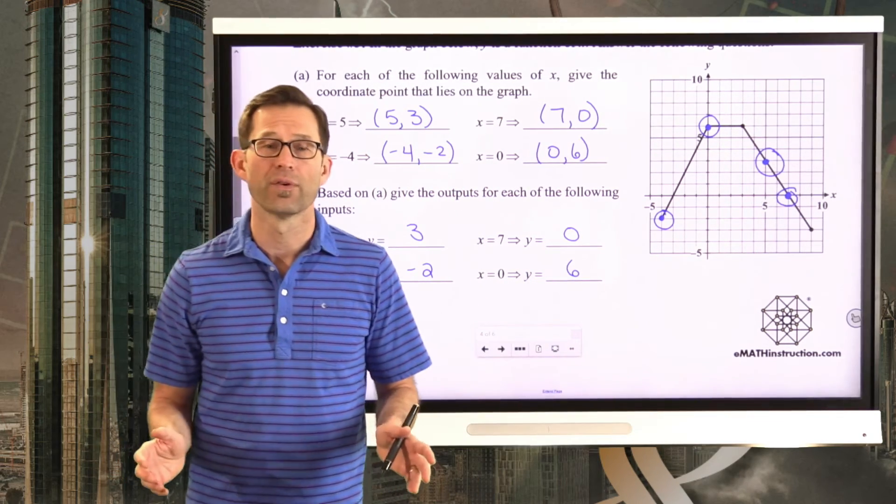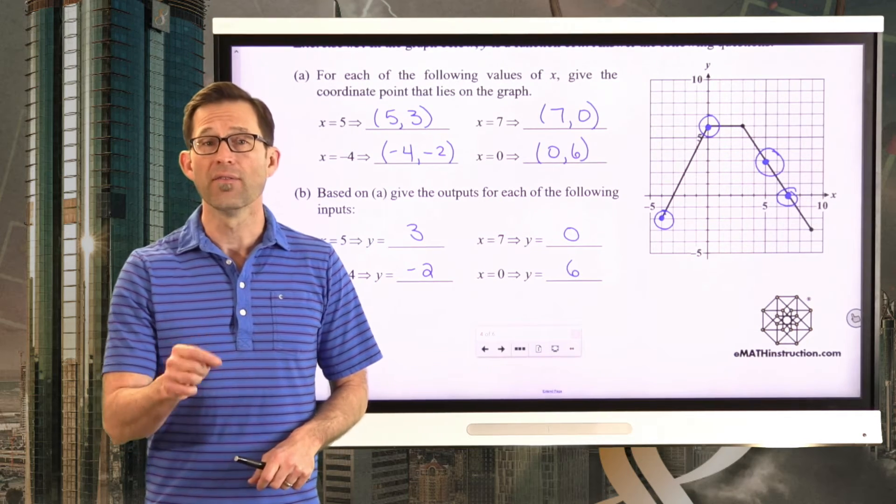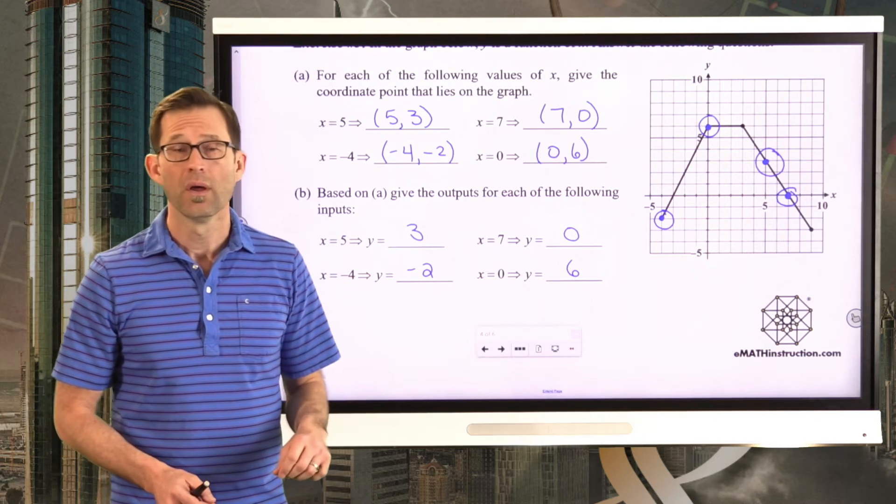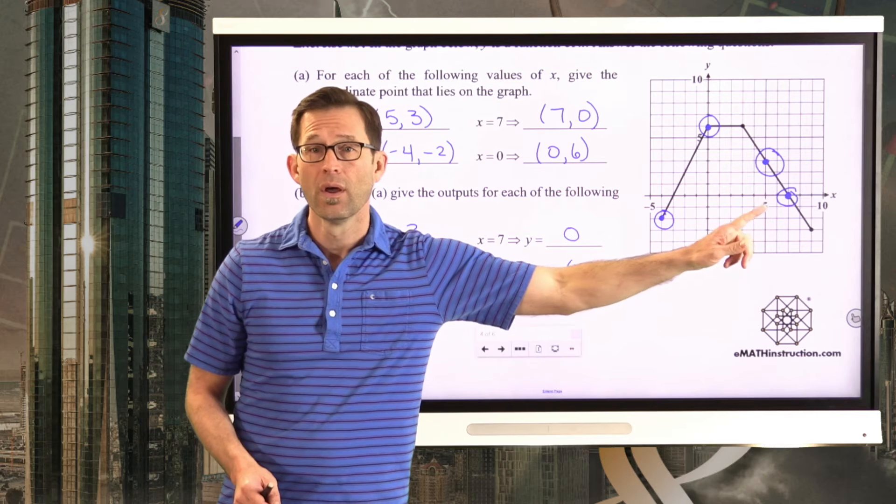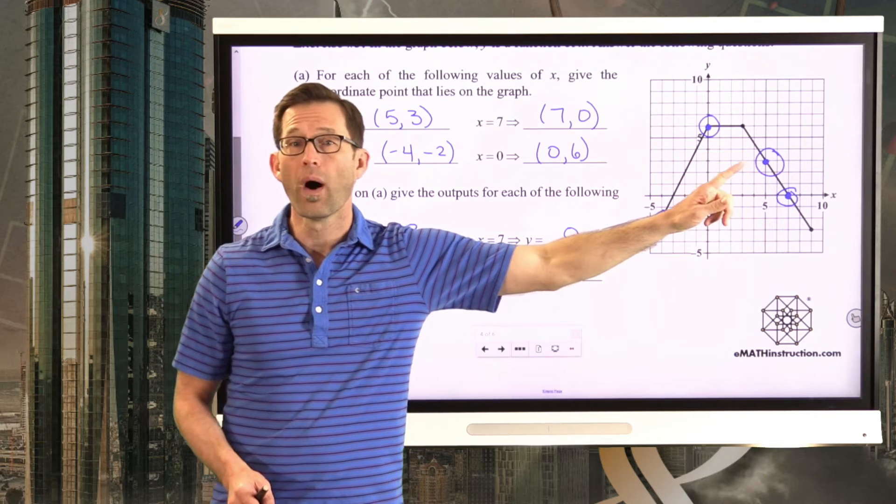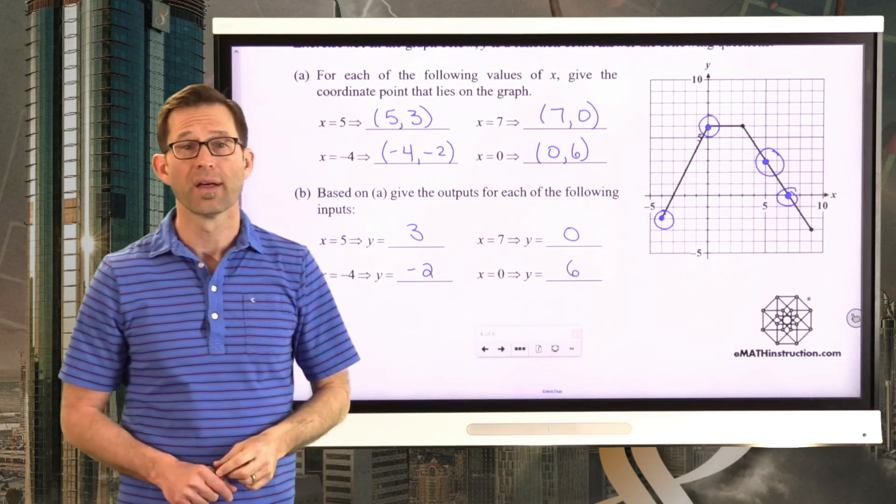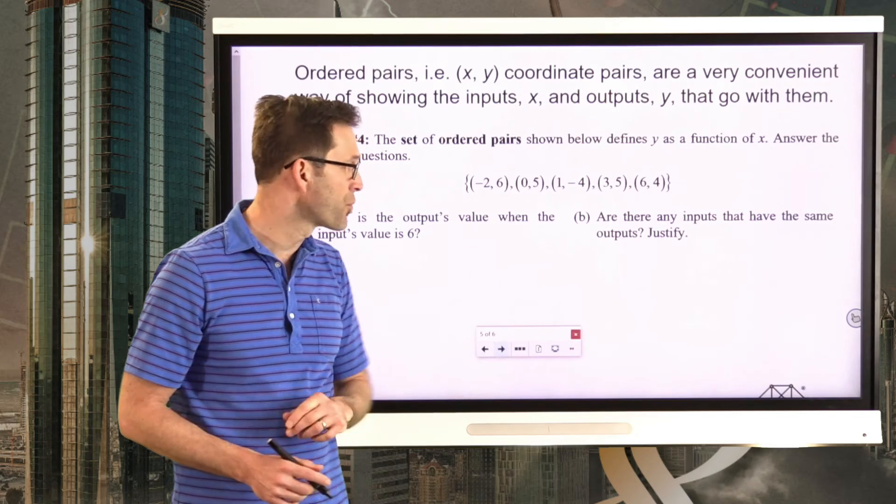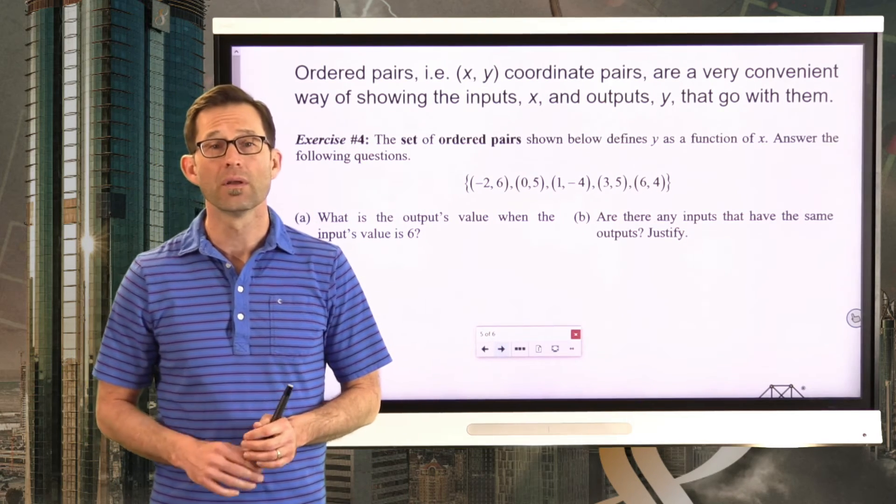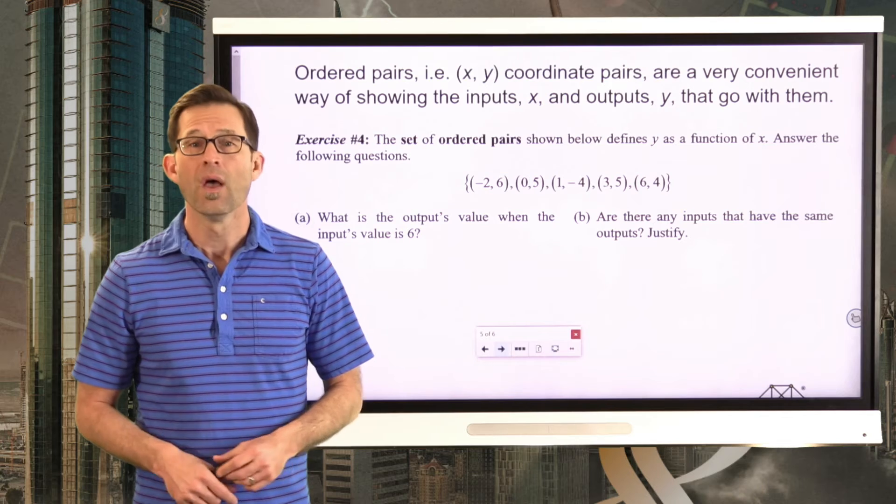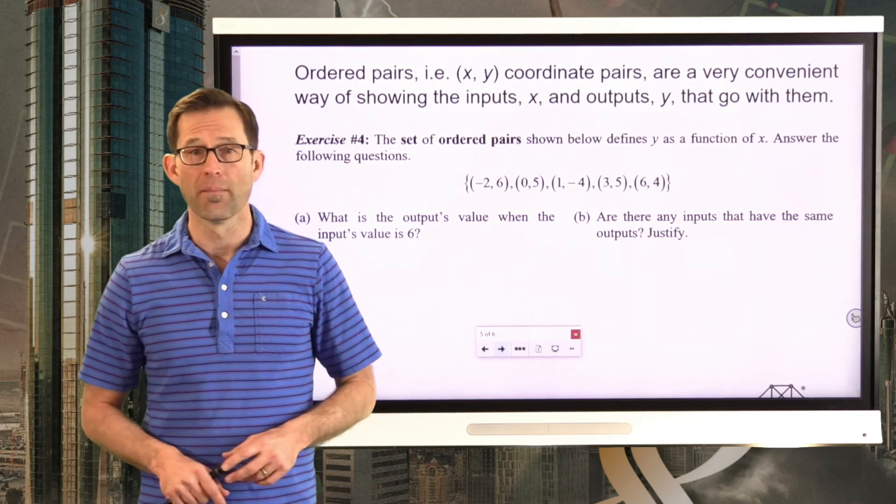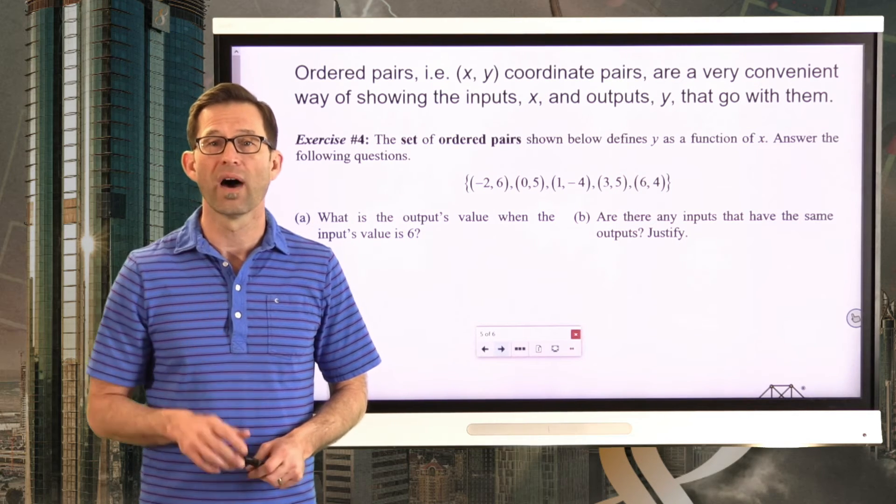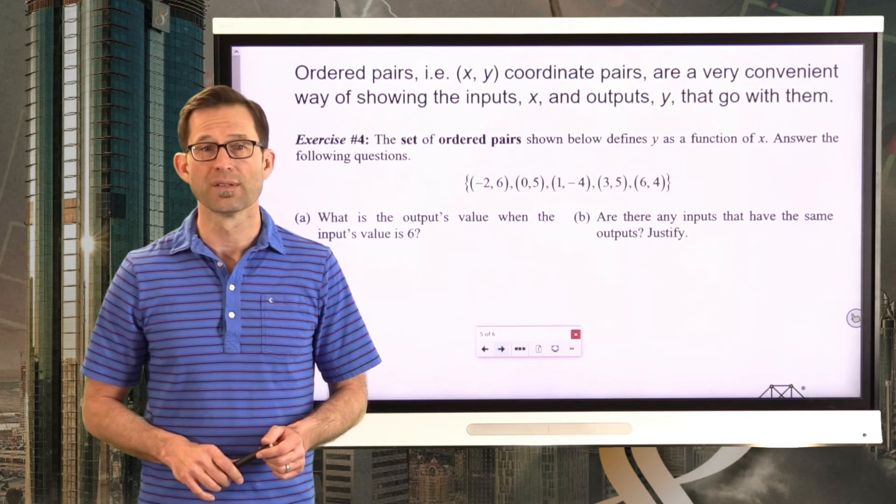So really, when we use a graph to evaluate the outputs of a function given a function's input, it's really nice because all we do is we take the input, which is the x value. We go along on the graph, find that x value, go up, figure out what the y value is for that x value, and that's the output, as simple as that. All right, let's keep going and take a look at one last problem where we represent a function using a set of ordered pairs.